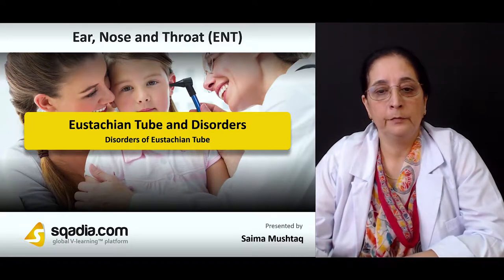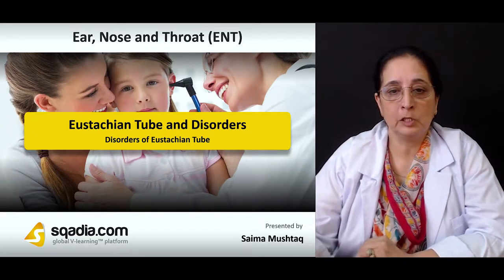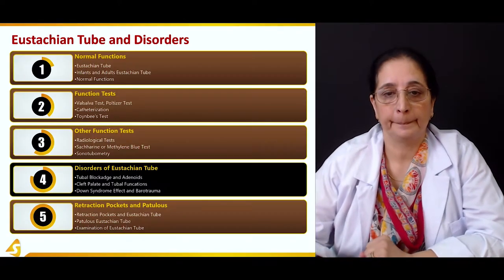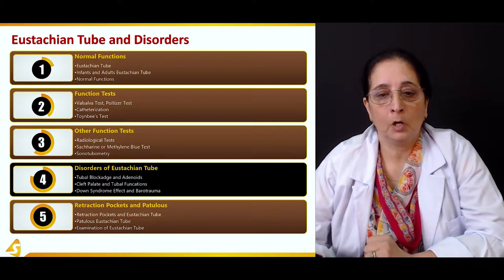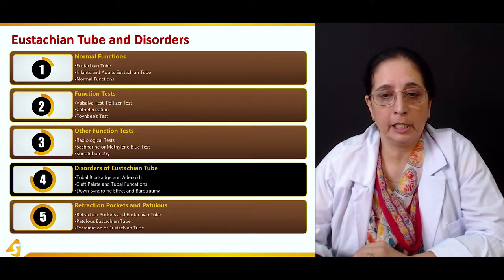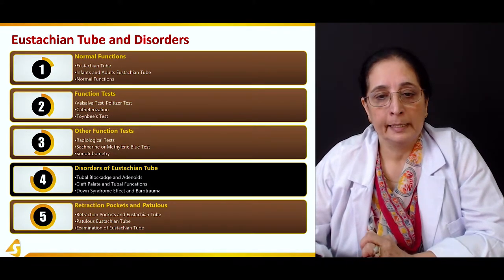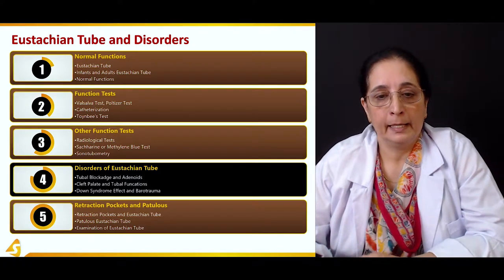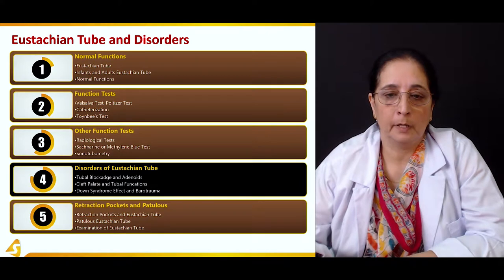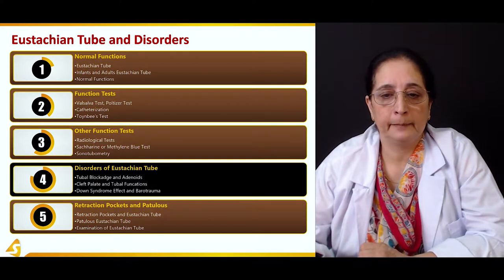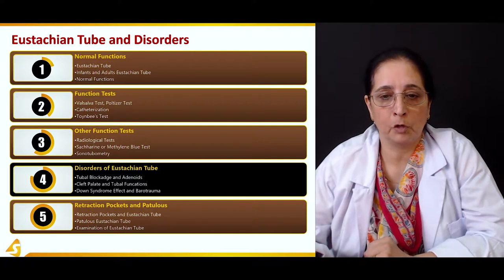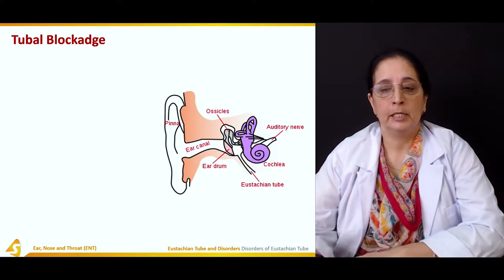Now in the fourth section of our lecture, we will talk about some disorders of the Eustachian tube. In this we will talk about tubal blockage and adenoids, cleft palate and tubal functions, and then we will also talk about Down syndrome effect and barotrauma.